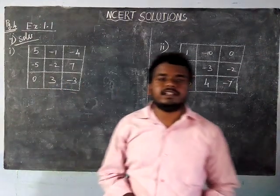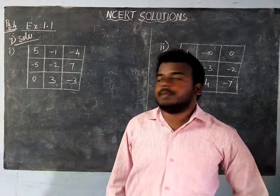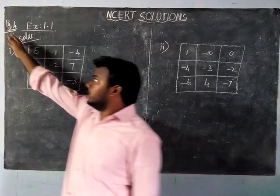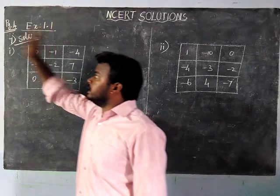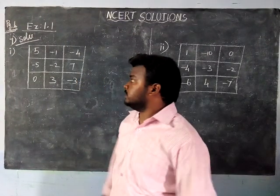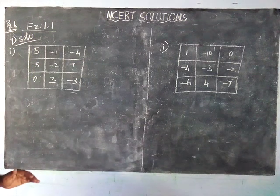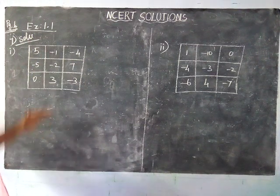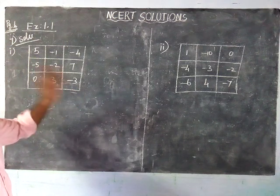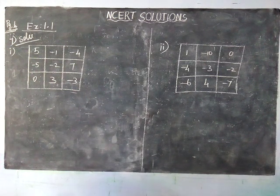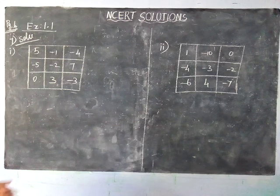Hi students, welcome to MCRT Solutions. Today we are going to see seventh standard maths, page number four, chapter one, exercise 1.1 — first subdivision. We are going to check whether it is a magic square or not. A magic square means when we add all the rows, columns, and diagonals, the sum is the same. If all the sums are same, it is a magic square.